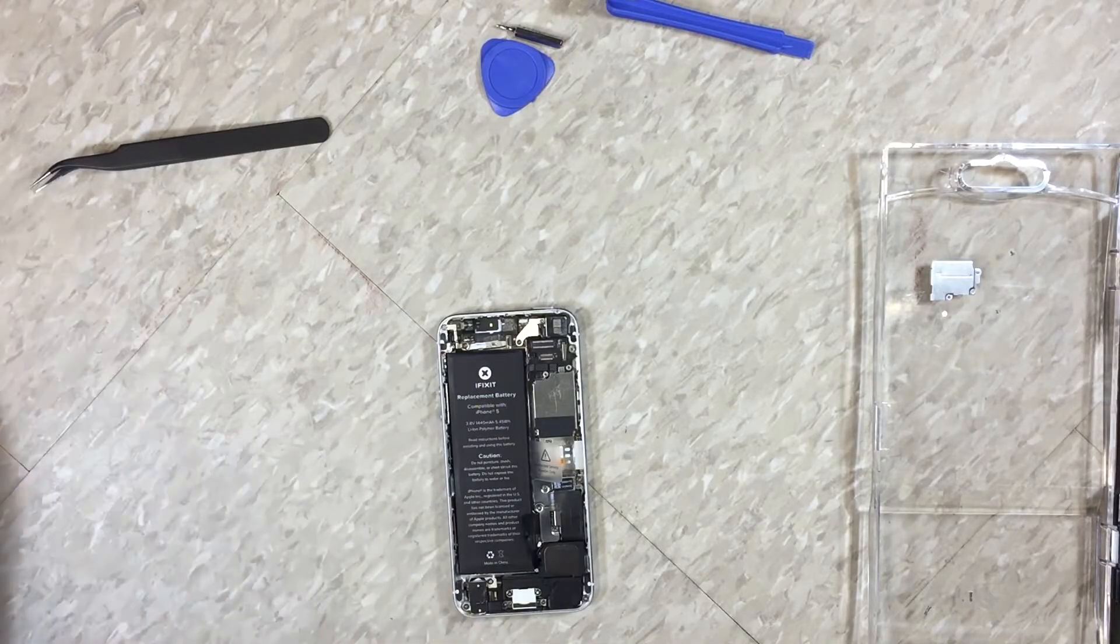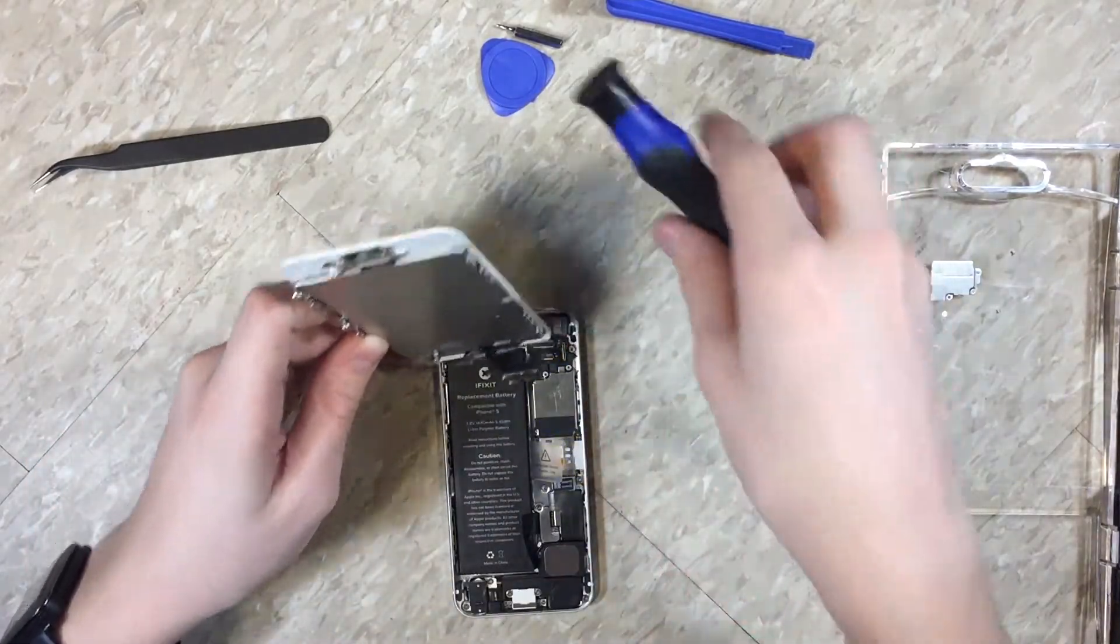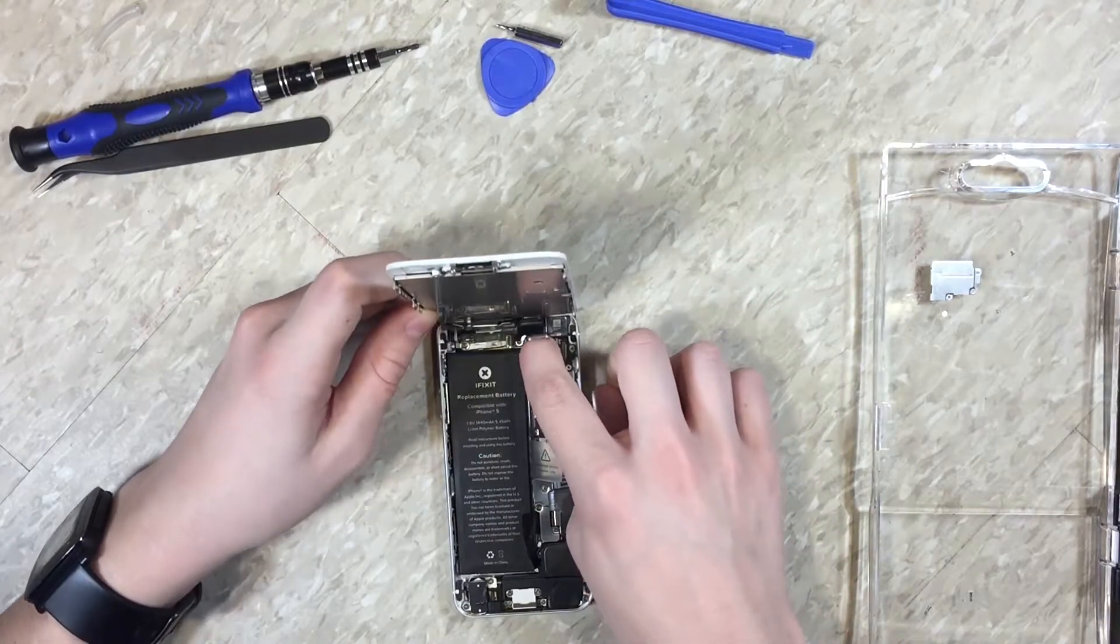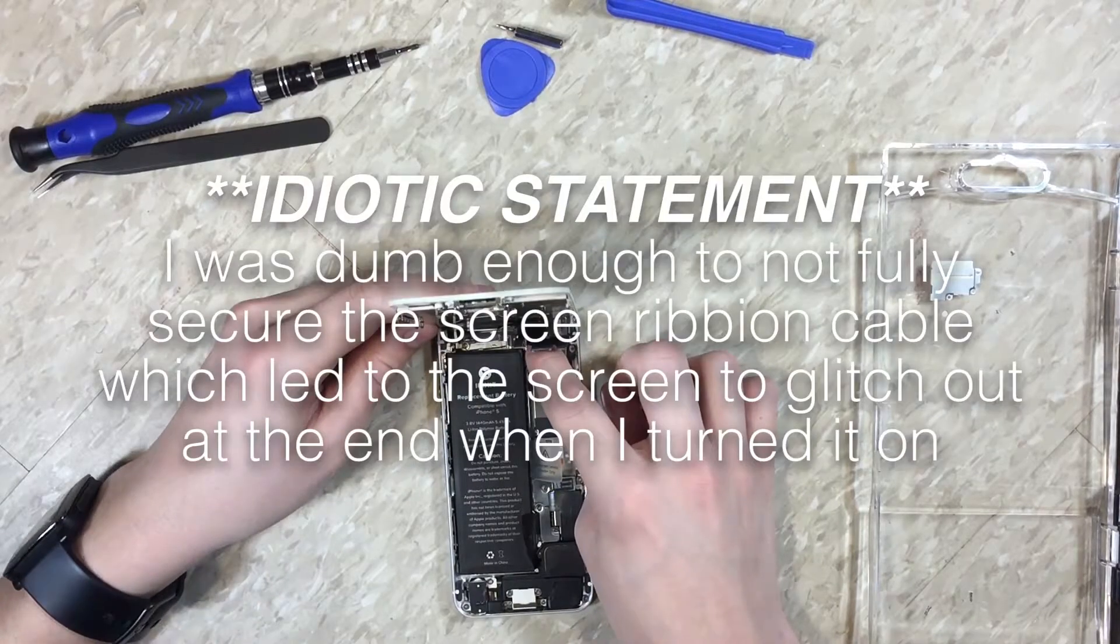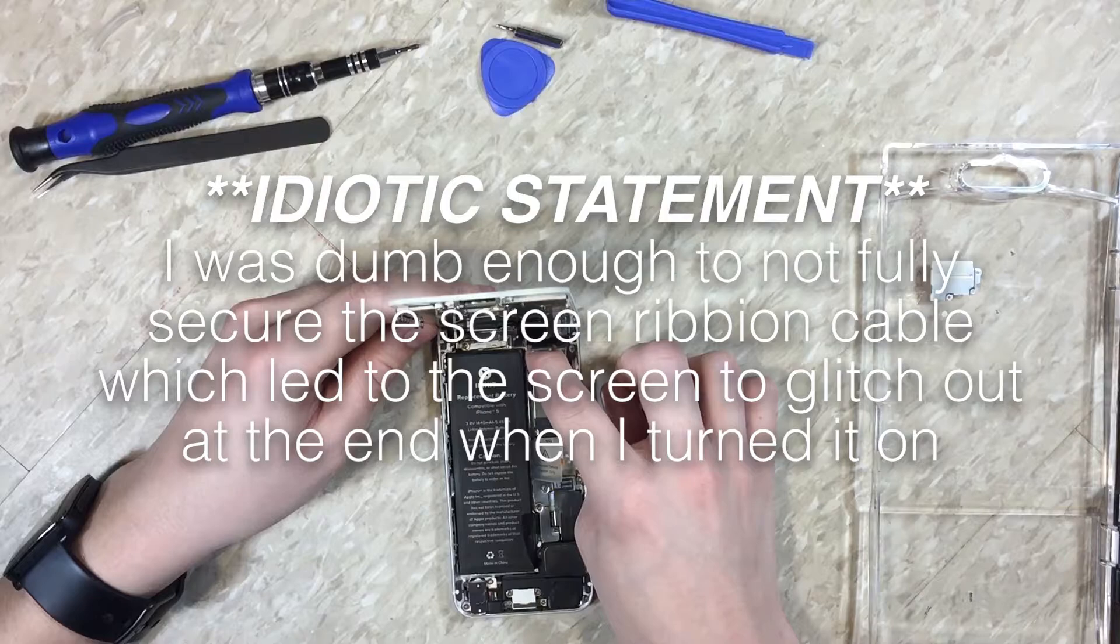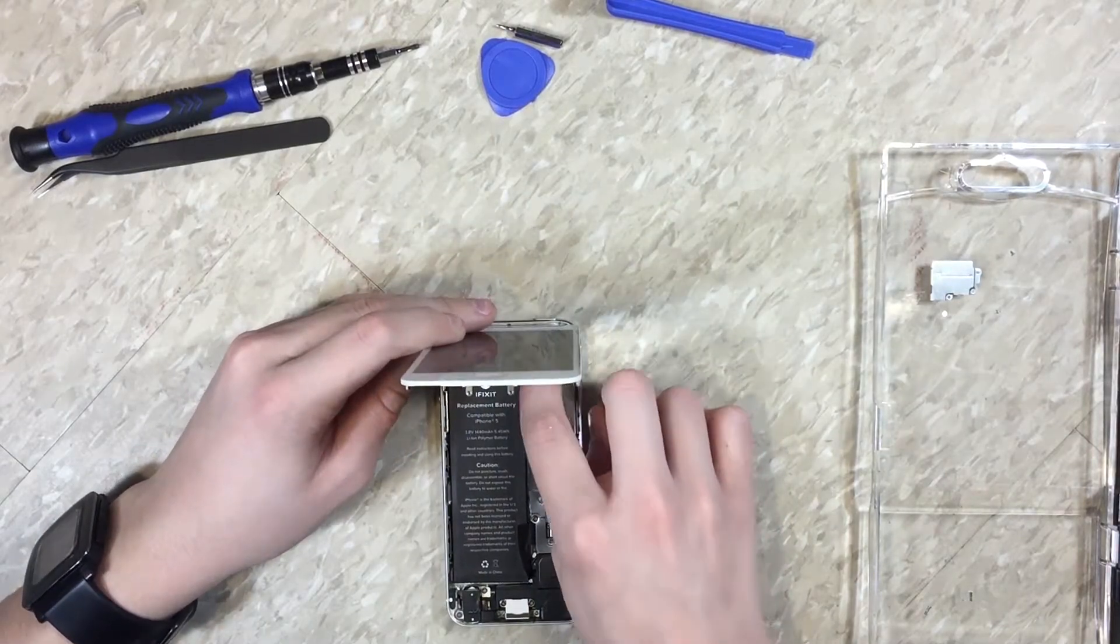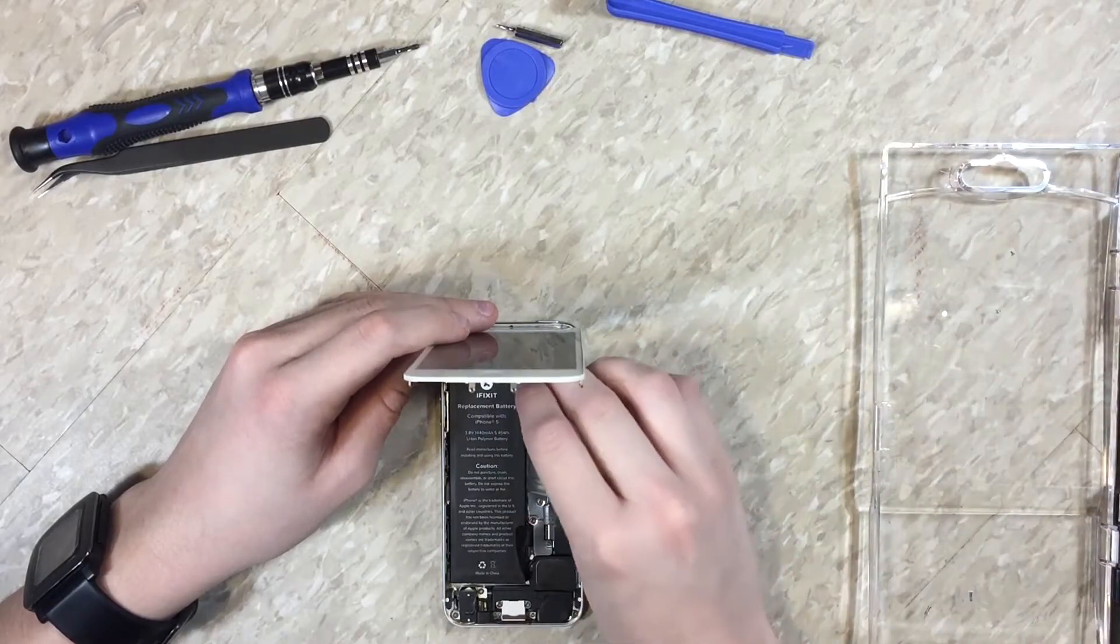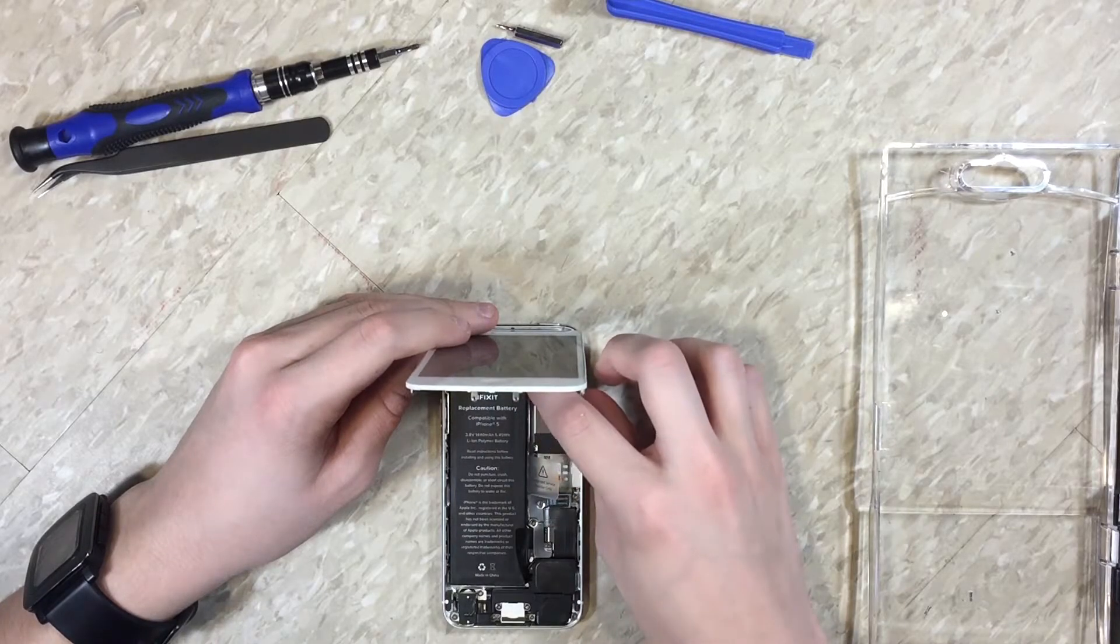The next thing we can do is grab our screen. And put the little ribbon cables back on. Get the thing, the plate, the metal plate that is protecting it.